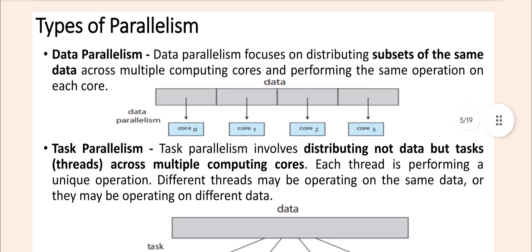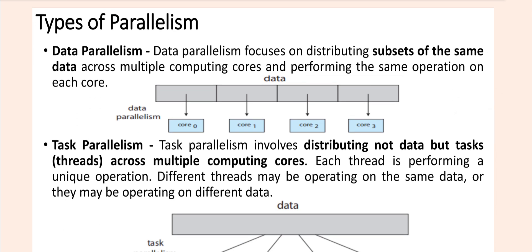There are two different types of parallelism we are going to discuss. One is the data parallelism. Another one is the task parallelism. What do you mean by data parallelism?